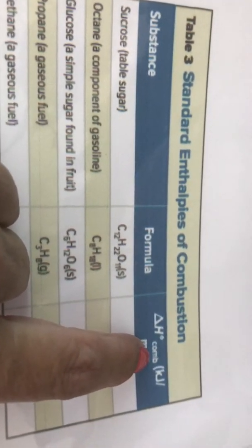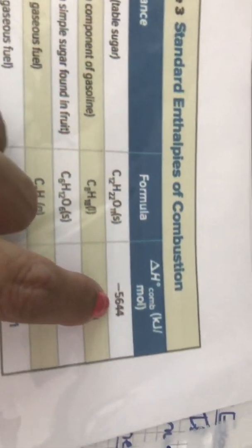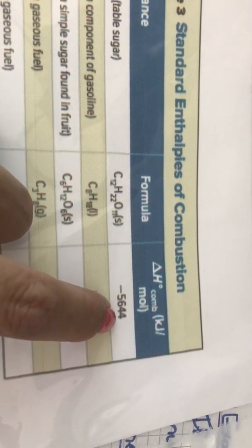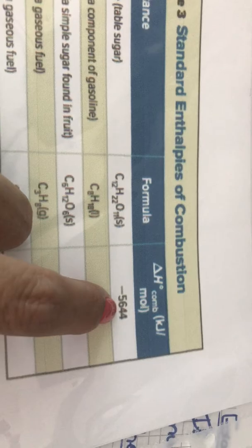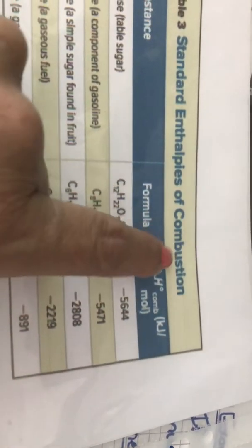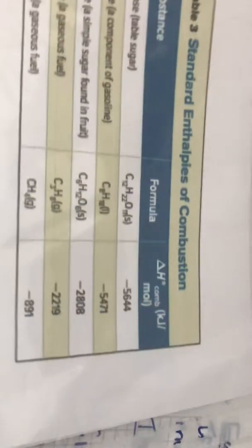If you want to combust it, burning it in oxygen, it will use 5,644 kilojoules per mole of energy. The negative in front is because this is an exothermic reaction.